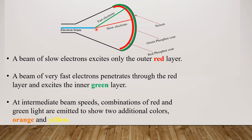Next, we have a beam of very fast electrons. These fast electrons penetrate through the outer red layer and into the inner green layer. The beam of very fast electrons penetrates through the red layer and excites the inner green layer, producing green color light.